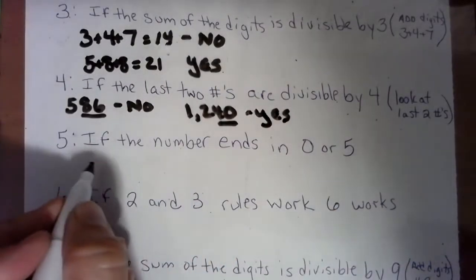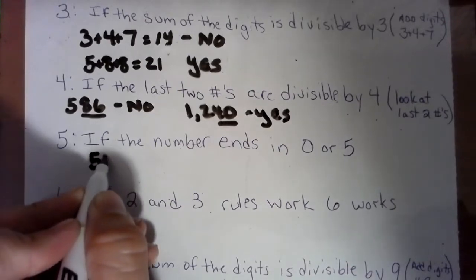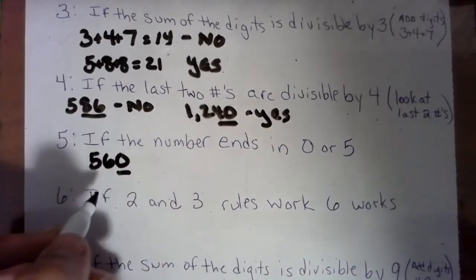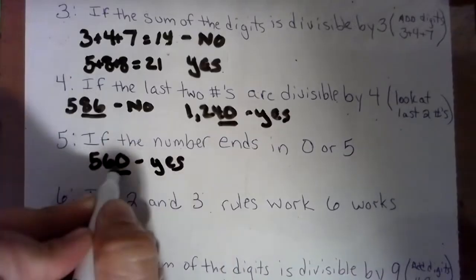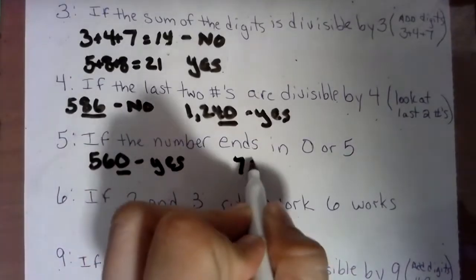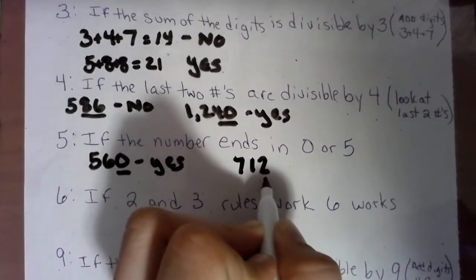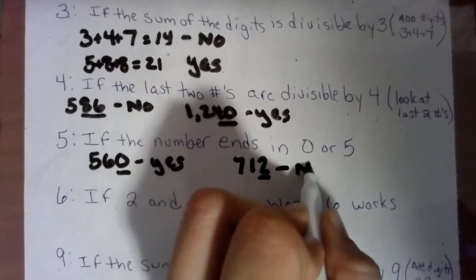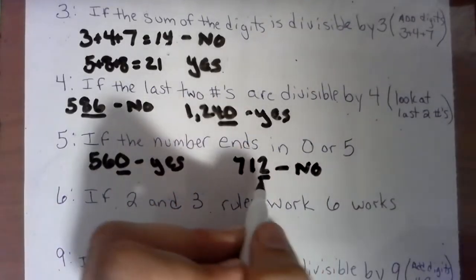A number is divisible by five if it ends in a five or zero. So if I have the number 560, that would be a yes because it ends in a zero or a five. But if we have 712, this does not end in a five or a zero, so that would be a no.